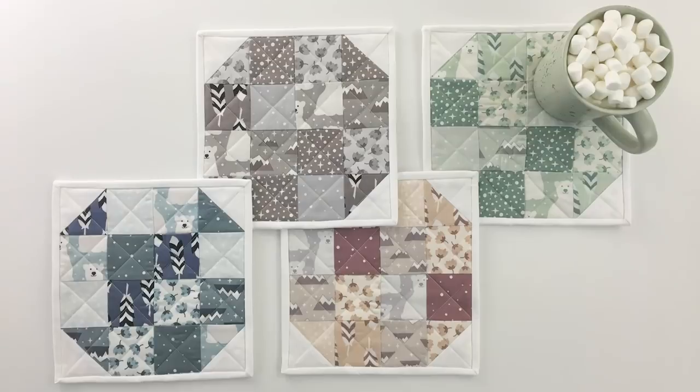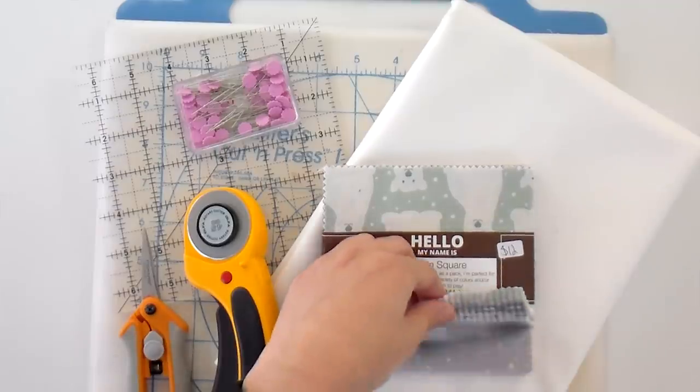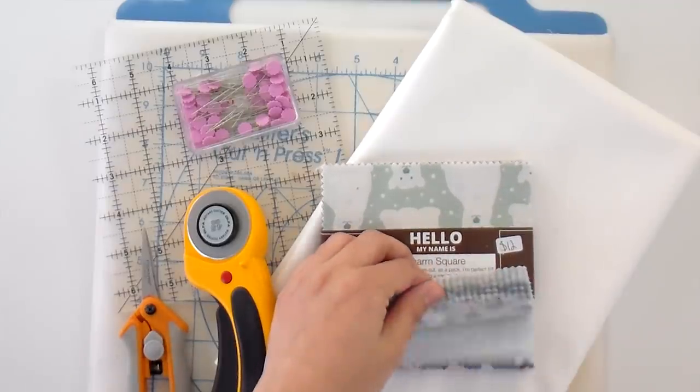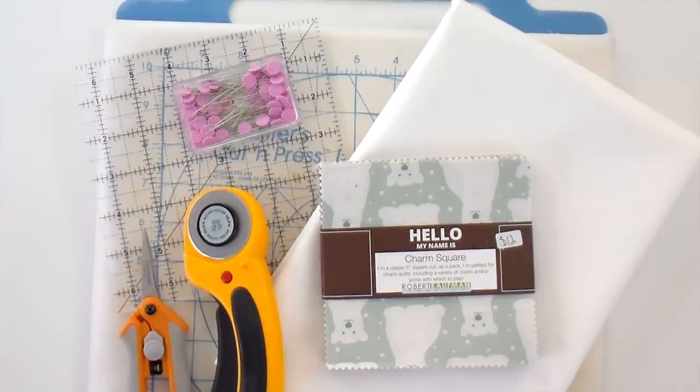Today we're going to be making snowflake mug rugs using a charm pack. That'll make it really fast and easy because you're just sewing from your charm pack and you don't even have to think about it. You can make a whole set of them and give them away as gifts or just keep them for yourself to have around the holidays when you're having that hot cocoa or a little spiked hot chocolate.